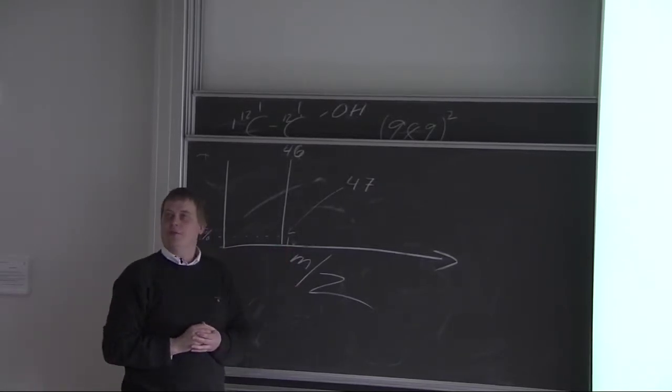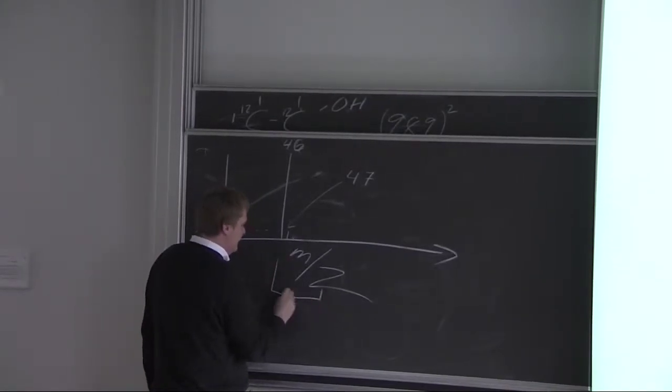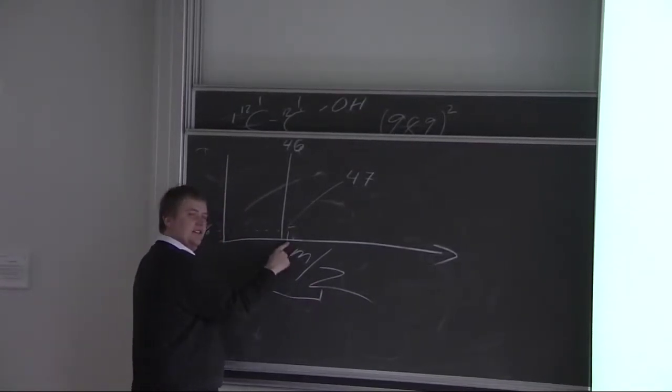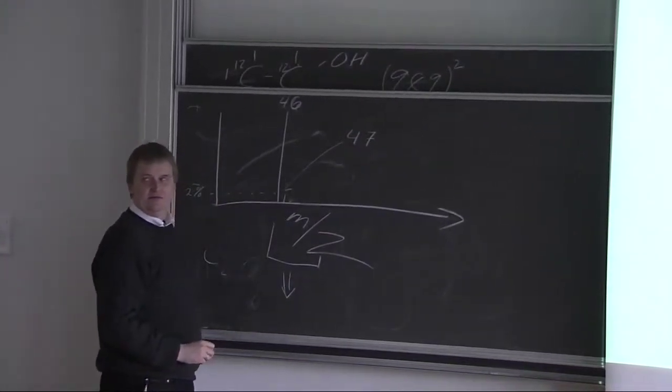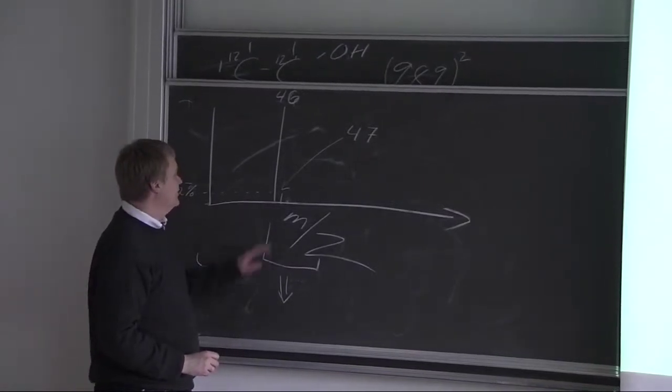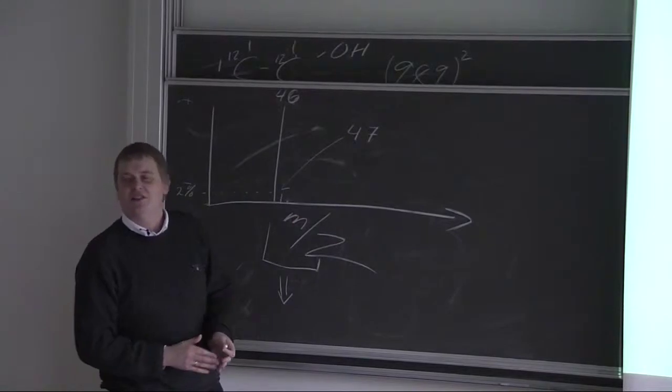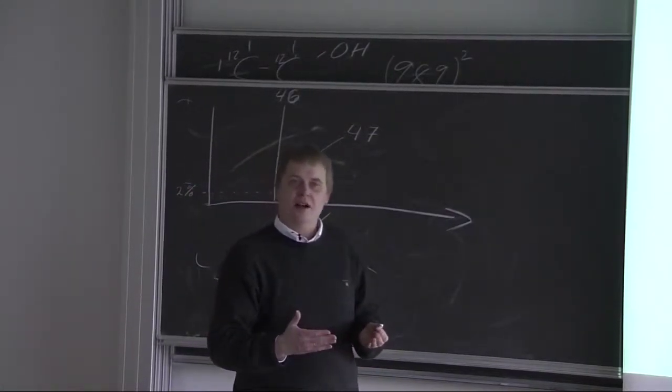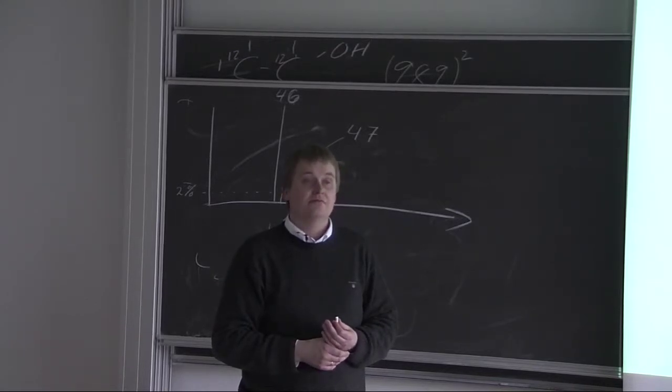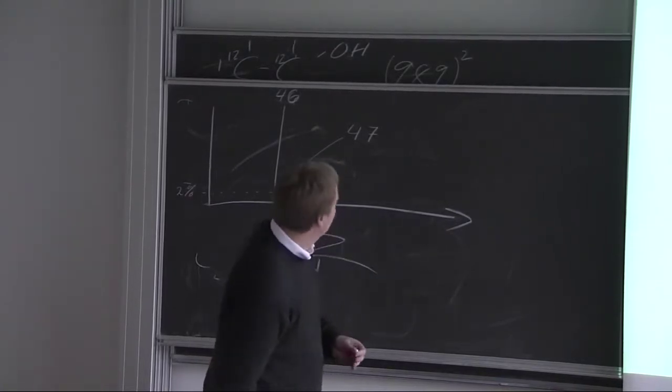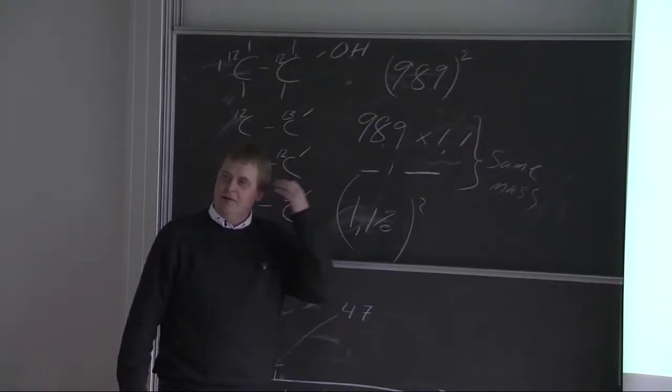This is called an isotope pattern. And again, if you take the weighted average of this, you're going to get the molar mass. So it's very important that any molecule that contains a lot of carbons, they will have an isotope pattern. This is a long way in memory, I assume.